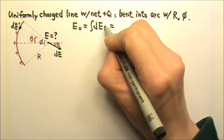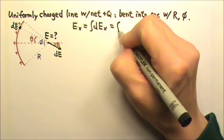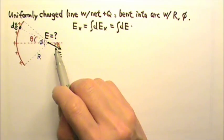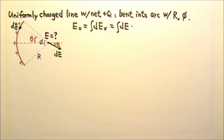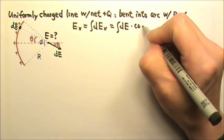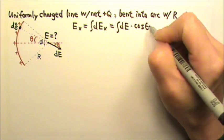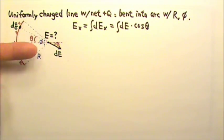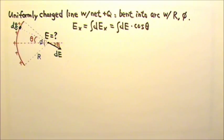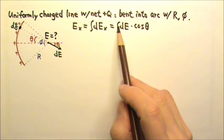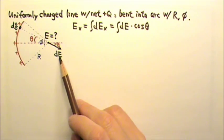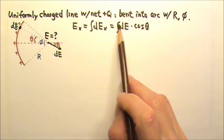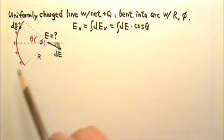To find the x-component, we just have to multiply dE by cosine or sine — it's cosine theta, because the x-component we want is adjacent to the angle. The dE is the field produced by a point charge, so we can use Coulomb's law to find dE.